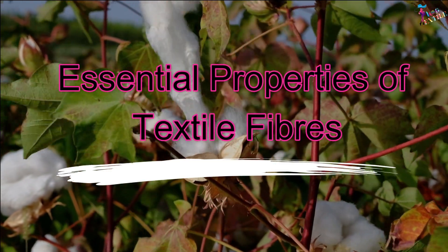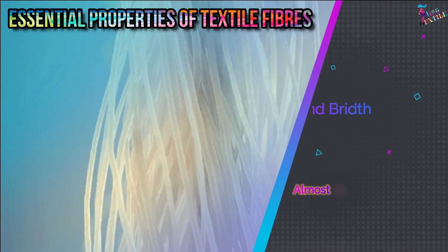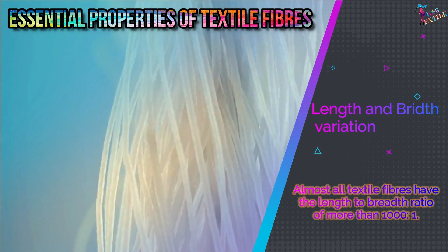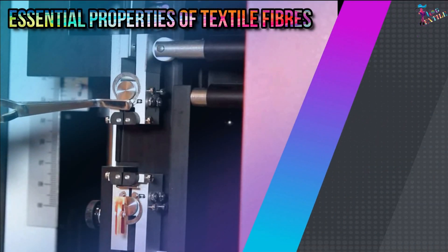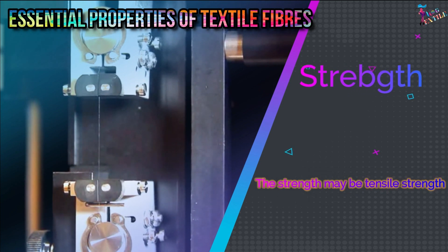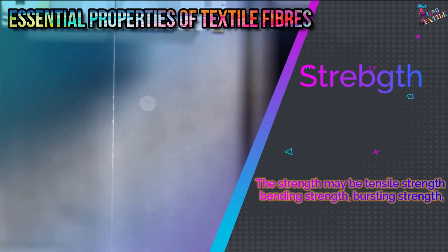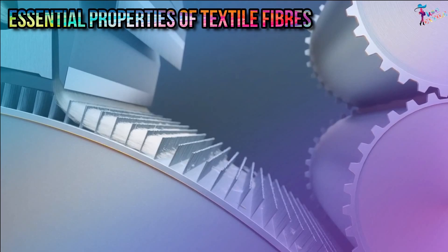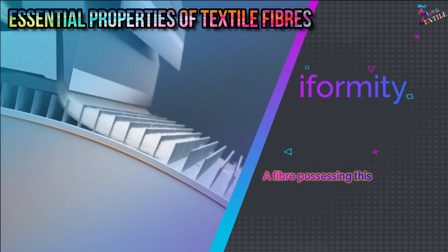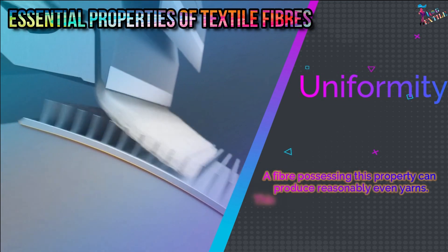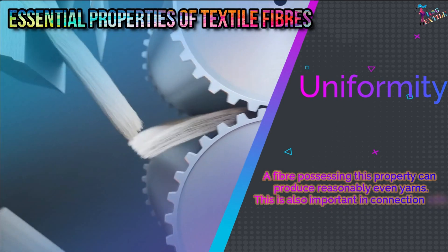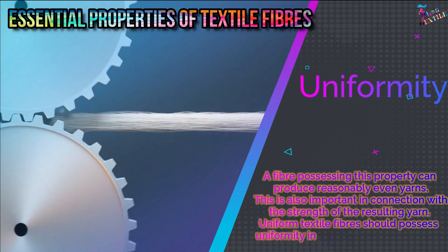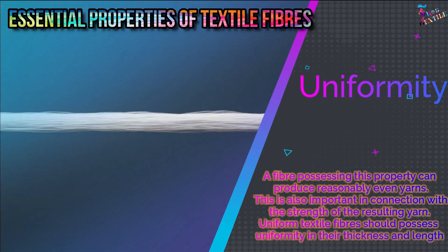Essential properties of textile fibers include length and breadth variation — almost all textile fibers have a length-to-breadth ratio of more than 1000 to 1. Strength may be tensile strength, bending strength, or bursting strength; a stronger fiber results in stronger yarn and fabric. Uniformity means a fiber can produce reasonably even yarns, and uniform textile fibers should possess uniformity in their thickness and length.